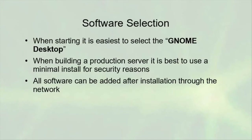Software selection: select which software needs to be installed. The easiest thing is to select the GNOME desktop, which gives you a GUI. However, Linux was designed to be run without a GUI. In a production environment, start with a minimal install and add only the features you need — having too much creates security issues. Any software missed during installation can be added afterward, as long as it's not network drivers, since you need the network to install things.